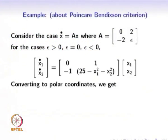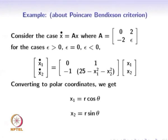In the previous example both diagonal elements were 25 – x1² – x2². Now, in this example one diagonal element is 0 and the second is 25 – x1² – x2². To analyze the behavior of the system, we convert the coordinates into polar coordinates. So x1 = r cosθ and x2 = r sinθ, where r is the radius and θ is the angle, giving x1² + x2² = r².